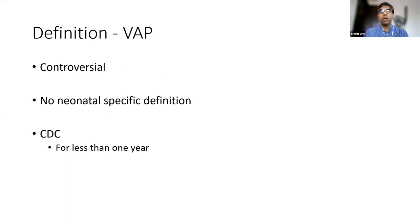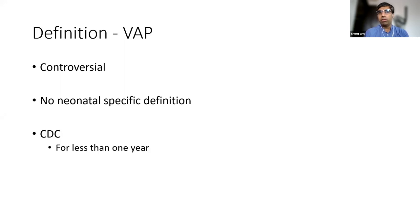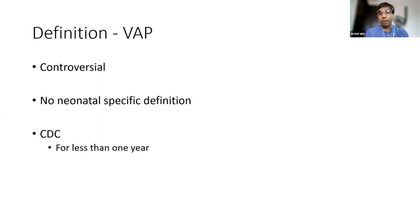I'm beginning with a controversy because the definition of ventilator associated pneumonia is controversial — it is not very well established. Even in adults, the CDC definition keeps changing again and again. Several new terms have been implemented even in the pediatric age group, but for neonates we don't have a standard well-accepted definition across the globe. Clinically the VAP may be evident, but if you're going to compare VAP across different units, the problem arises because we want a standard definition.